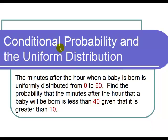This is a video on conditional probability and the uniform distribution. The question states, the minutes after the hour when a baby is born is uniformly distributed from 0 to 60.